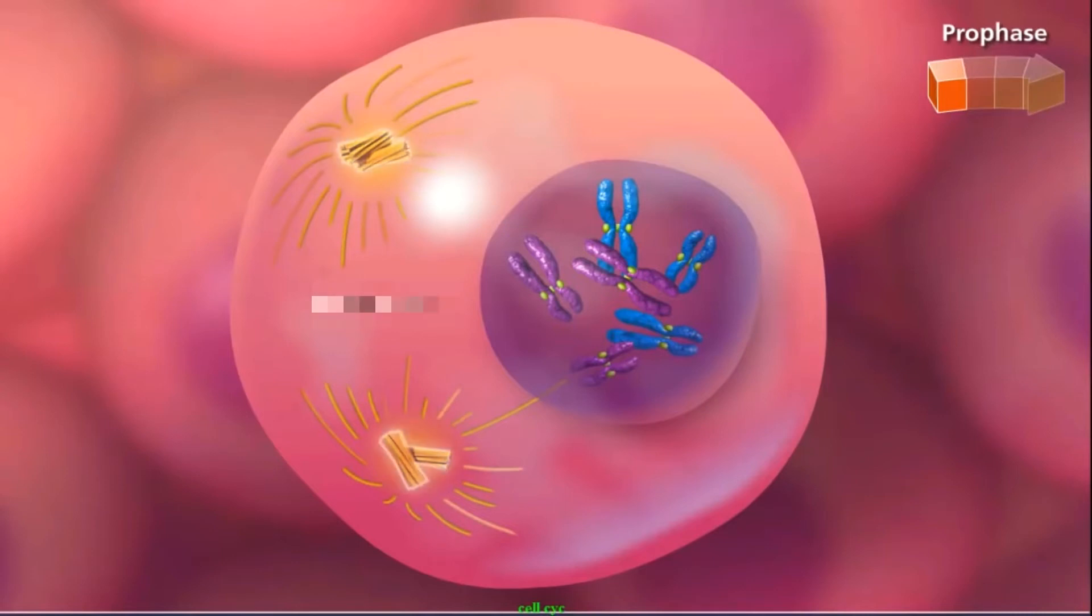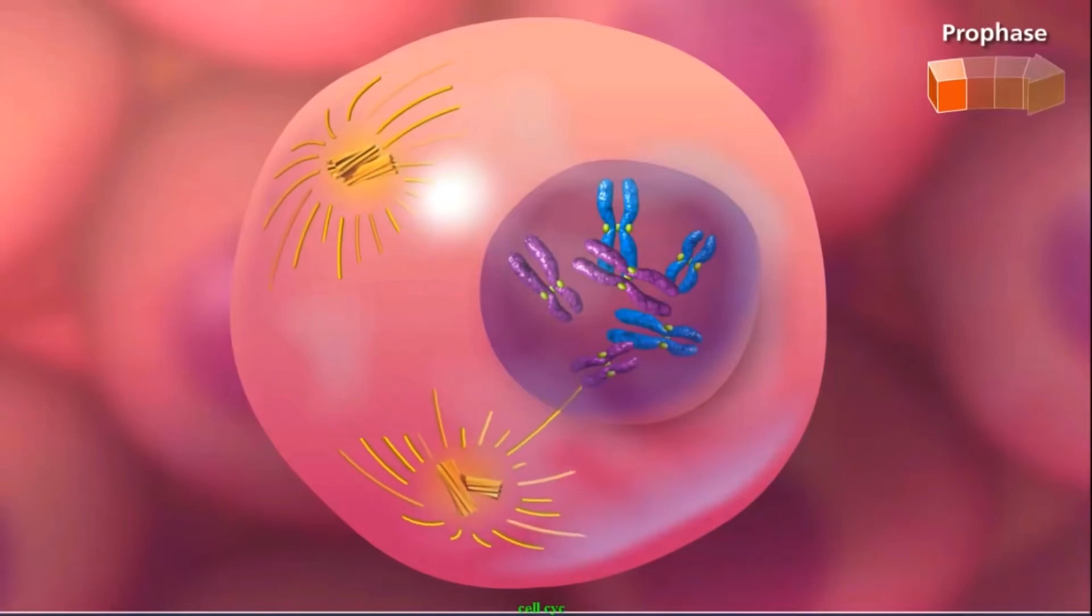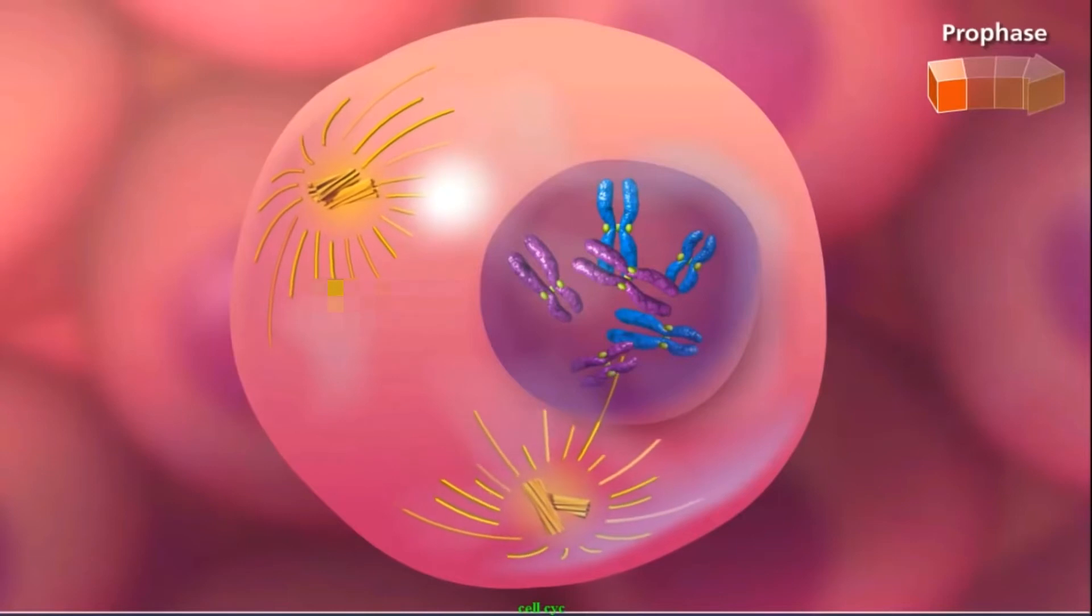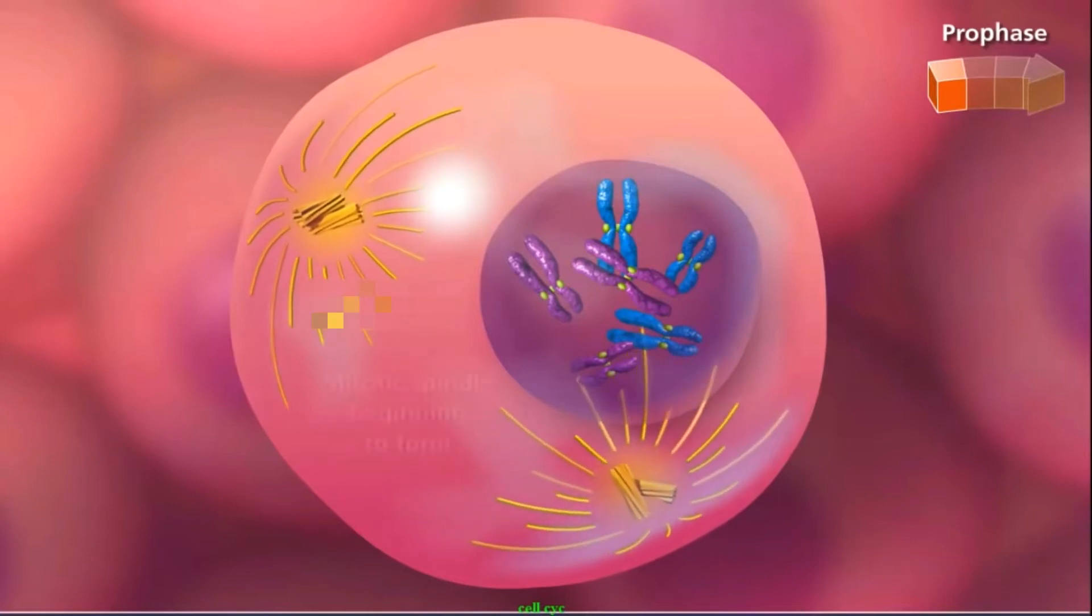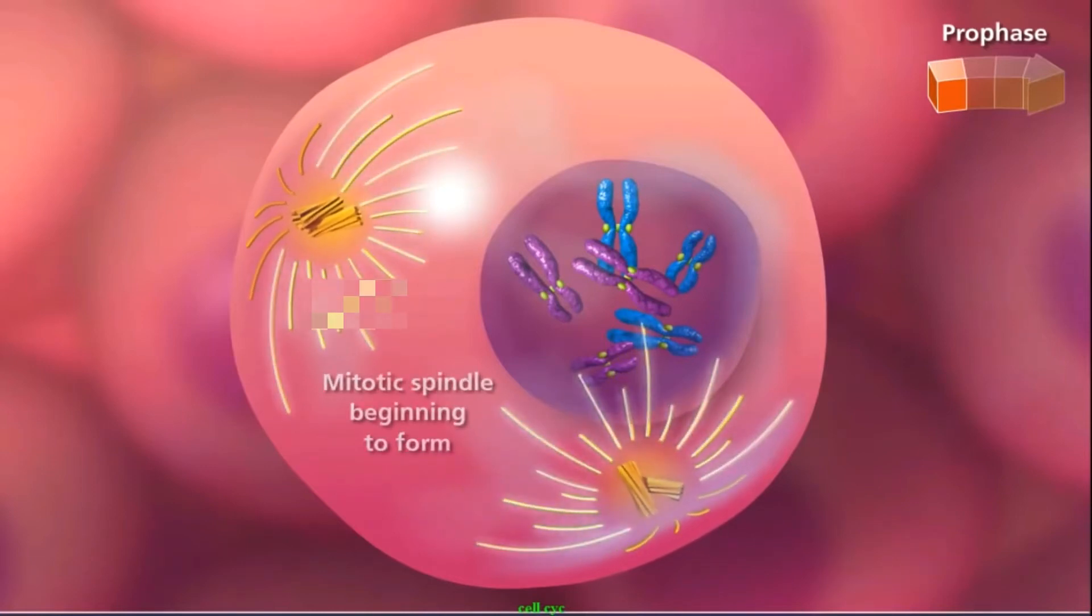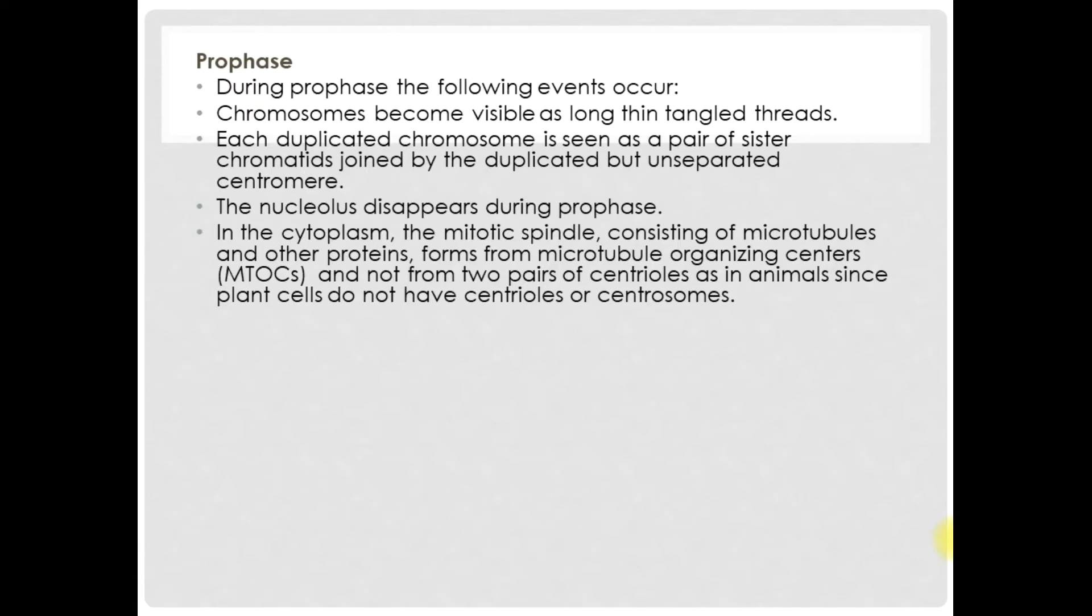In the cytoplasm, the mitotic spindle consisting of microtubules and other proteins forms from microtubule organizing centers and not from two pairs of centrioles as in animals, since plant cells do not have centrioles or centrosomes. This is a very important point to note that plant cells do not have centrioles but they have microtubule organizing centers.